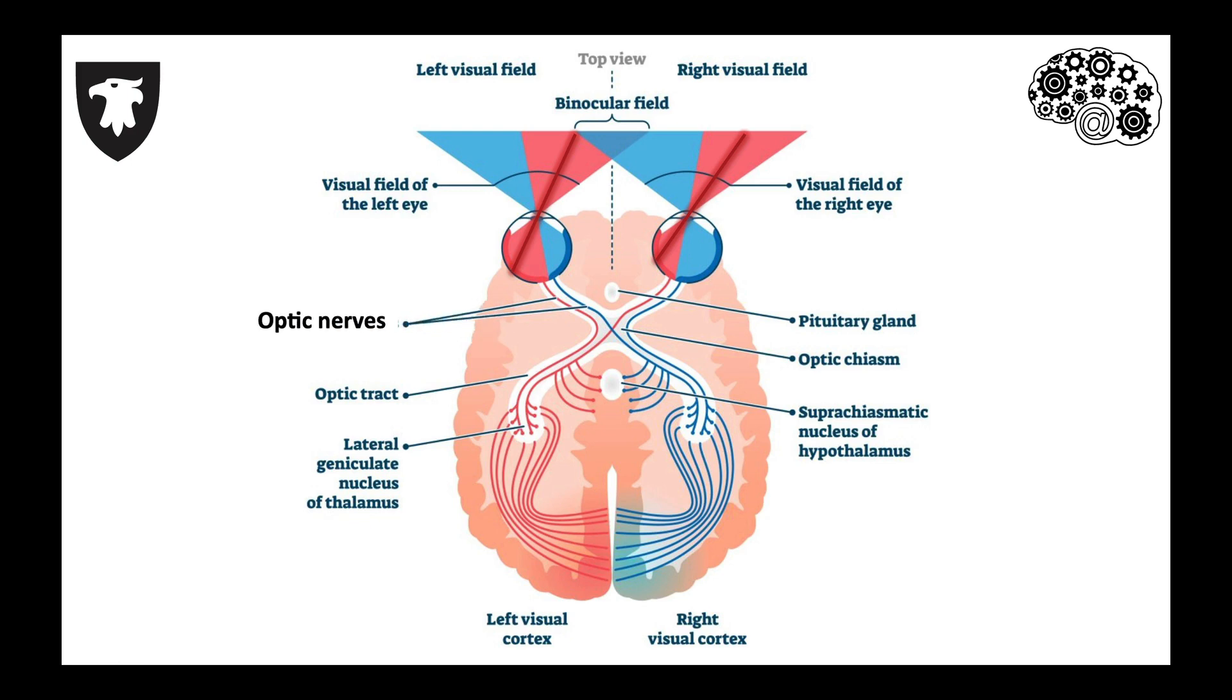The optic nerves carry information from the eye to the brain, so that the inside part of the right eye crosses over at the optic chiasm to the opposite or contralateral side of the brain.